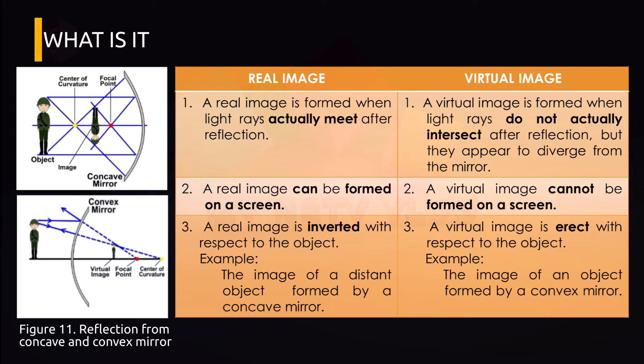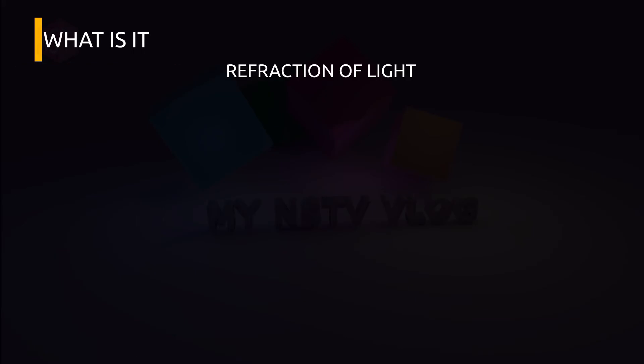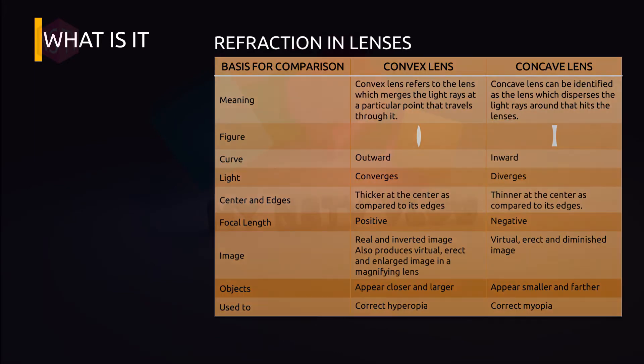So if light can be reflected, it can also be refracted. So one example of it is refraction in lenses. So please refer to page 13 of your module. Take a look at the table. The difference between convex and concave lens. Convex lens refers to the lens which merges the light rays at a particular point that travels through it. Light rays converge. It curves outward, thicker at the center as compared to its edges. The focal length is positive and the image is real, inverted, virtual, erect or upright, and enlarged or bigger. The object appears closer and larger. It is also used to correct hyperopia.